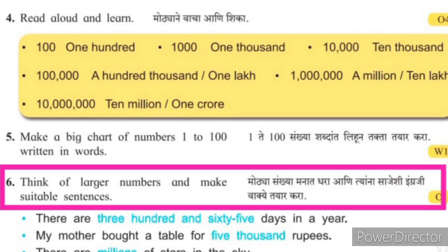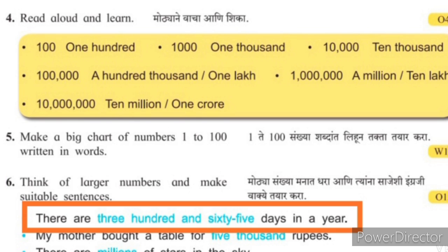Now the last question is Instruction number 6: Think of larger numbers and make suitable sentences. Mothya sankhya manat dhara aani tyannas saajeashi Ingraji vakye tayar kara. First example: 'There are 365 days in a year.'